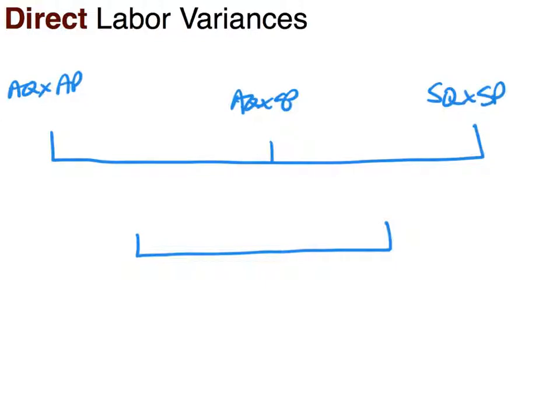The chart is exactly the same. The three pegs in the primary diagram are labeled the same: actual quantity times actual price for peg one, peg two is actual quantity times standard price, and peg three is standard quantity times standard price. Remember in the first video we described and defined each one of those items, so again if you haven't watched that video please go back and watch it.